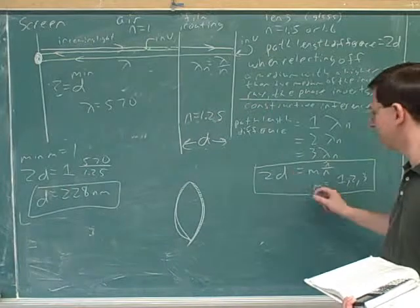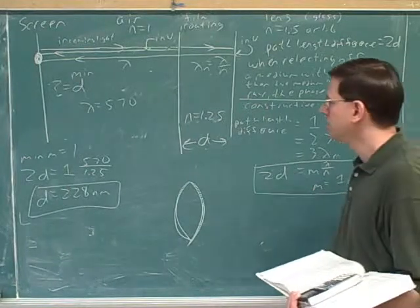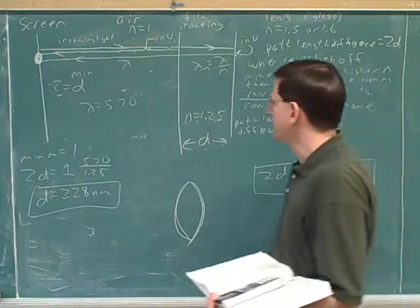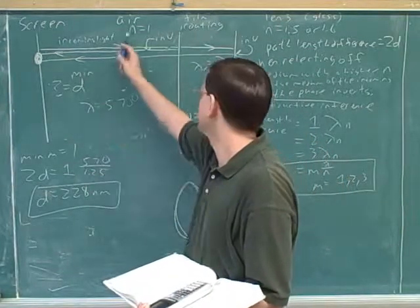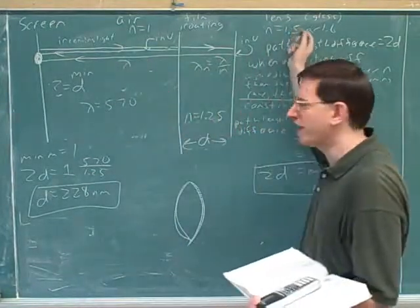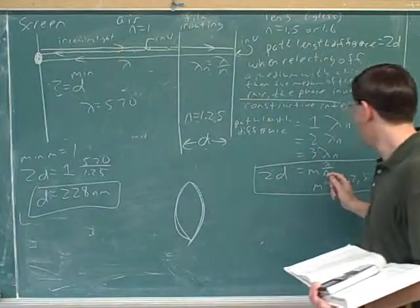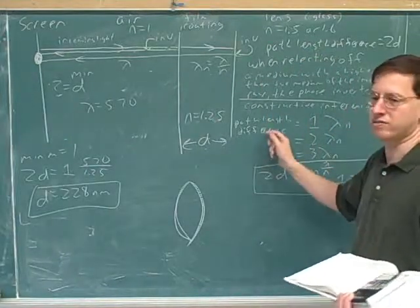All right. And then they said minimum d. Well, that means the minimum m over here. All right. One thing that would be very easy, I think, is to plug in the wrong n here. Because we have three different ns: 1, 1.25, and 1.5. But what we want here is the n of the film, because that's where the path length difference occurs.